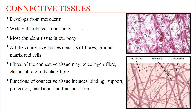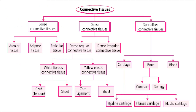Functions of connective tissue: they help in binding, supporting, protecting, act as insulation material, and assist in transportation. Connective tissues are broadly classified into loose connective tissue, dense connective tissue, and specialized connective tissue. Loose connective tissue is classified into areolar tissue, adipose tissue, and reticular tissue.